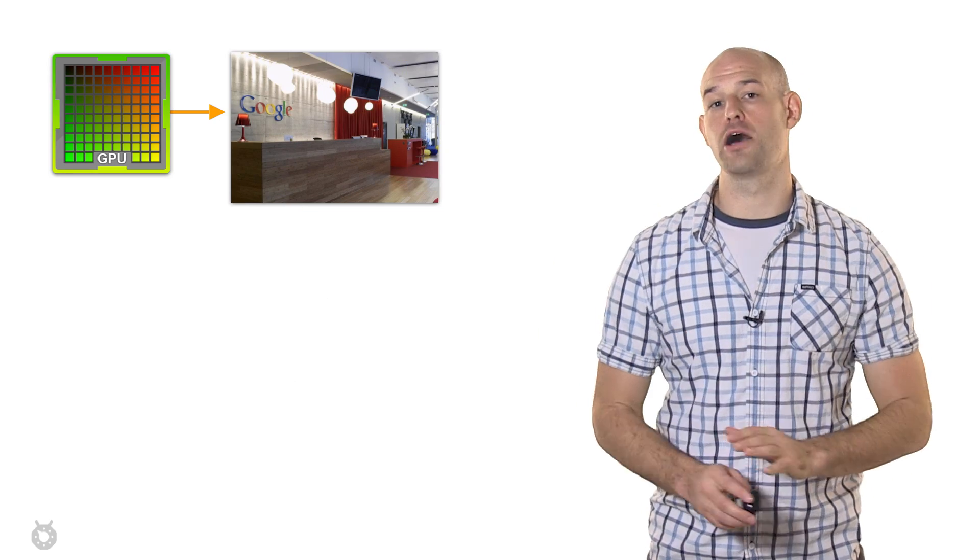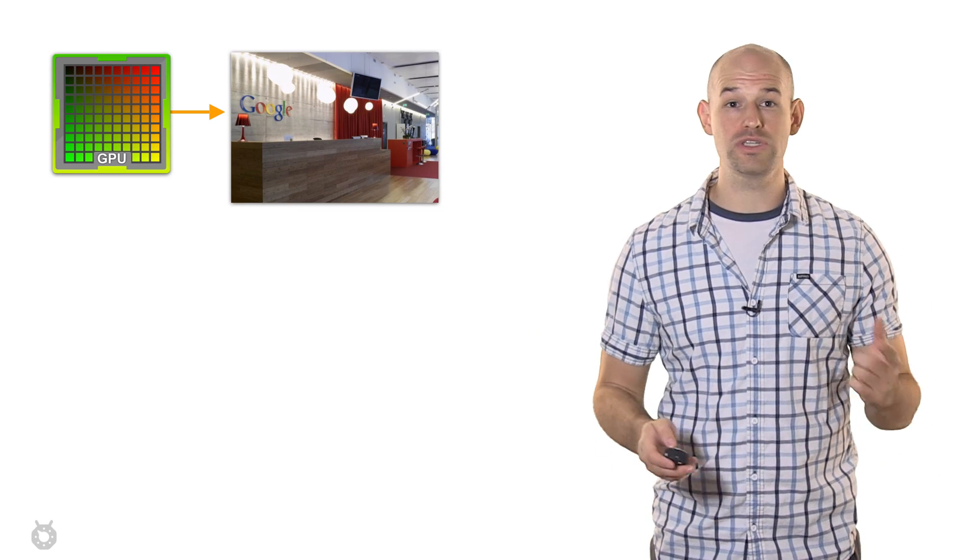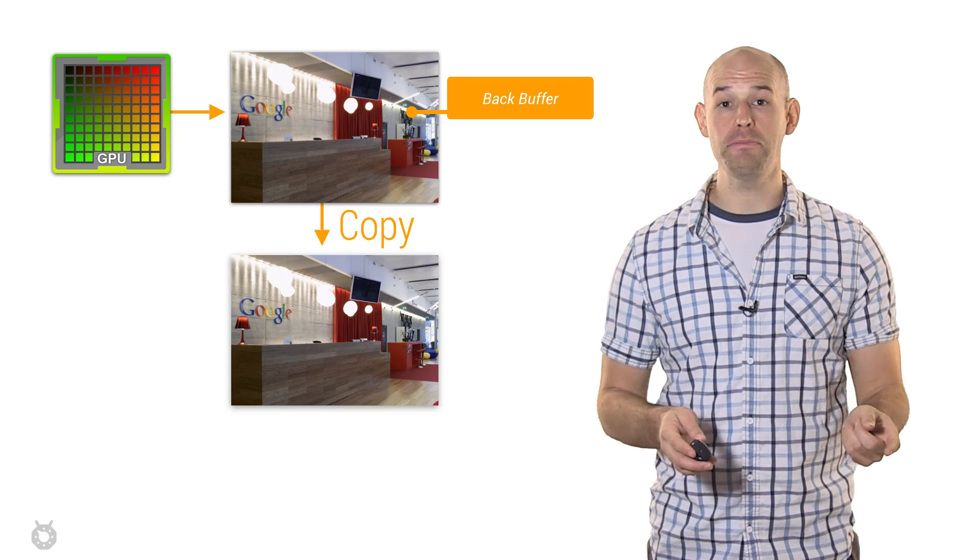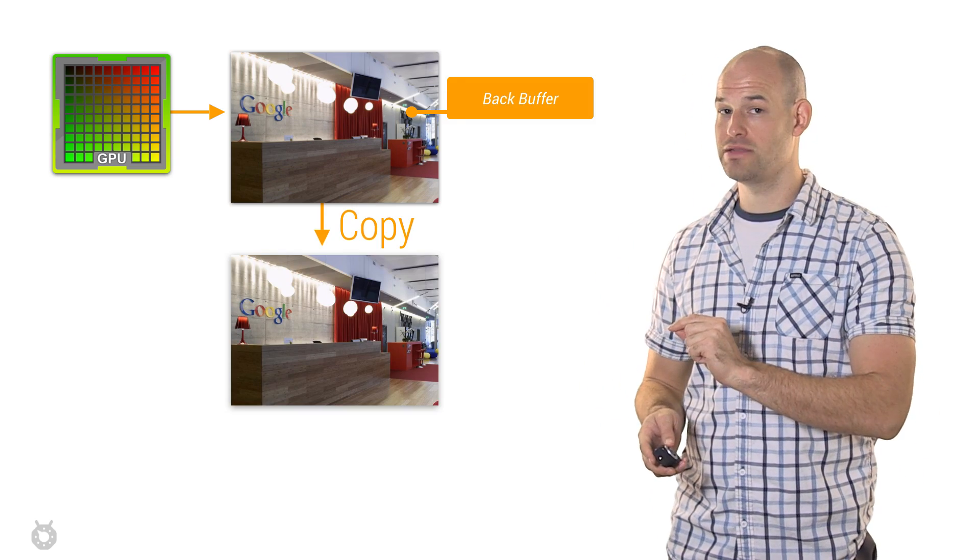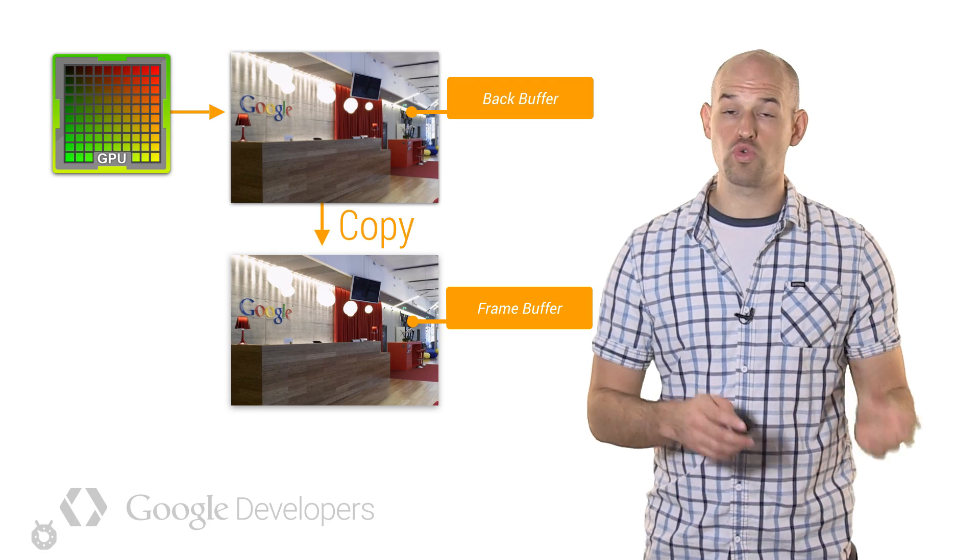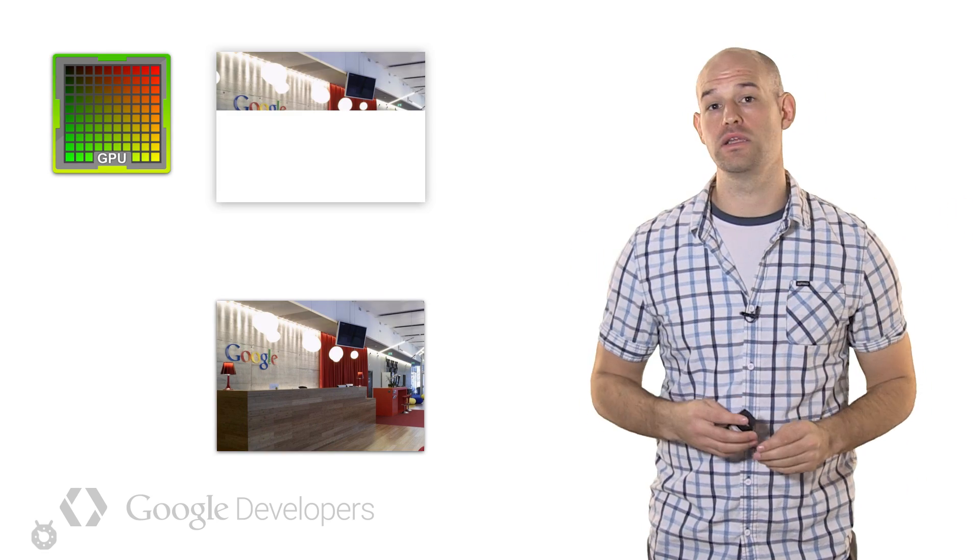A solution to this is known as double buffering. Effectively, when the GPU is done drawing a frame to memory, known as the back buffer, it will copy it to a secondary area of memory, known as the frame buffer. When it draws the next frame, it'll begin filling in the back buffer while the frame buffer remains untouched.